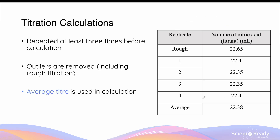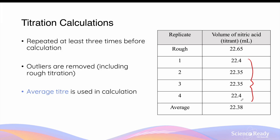This is an example of data from a titration experiment. The first rough titration was 22.65 millilitres, and you can see the subsequent four trials achieved a lower volume. Rough titration usually gives a higher volume because in the very first time you perform a titration, you're likely to over-add the titrant from the burette, as you don't know when to expect the end point of the indicator to occur. When calculating the average titer volume, we only take reliable and consistent data, not including the rough titration. Adding the four titer volumes and dividing by four gives an average titer volume of 22.38 millilitres.